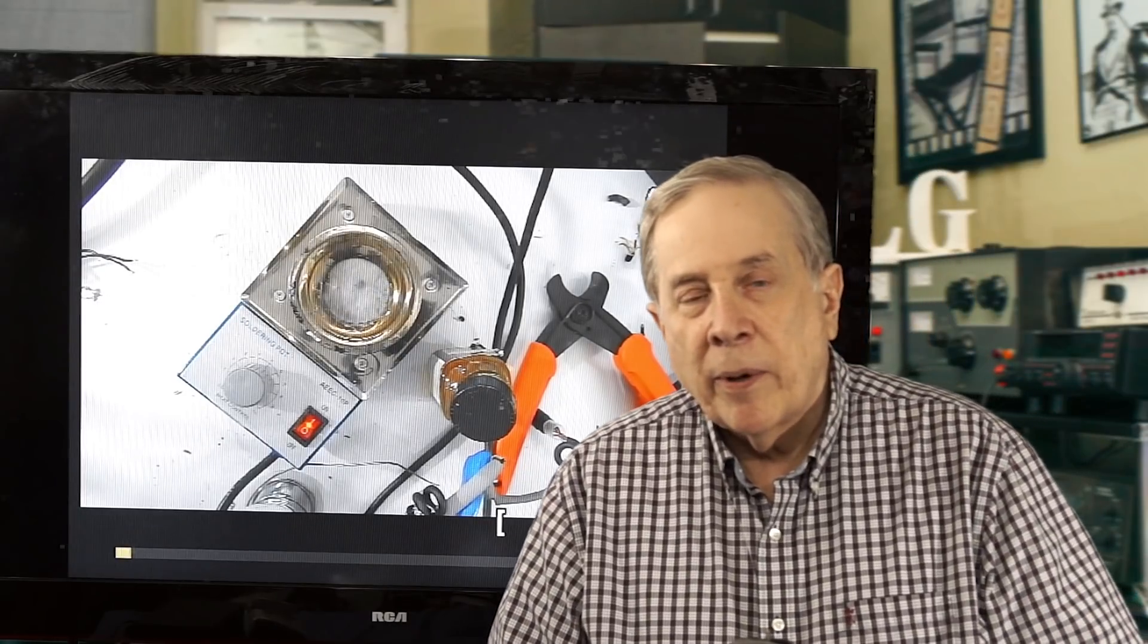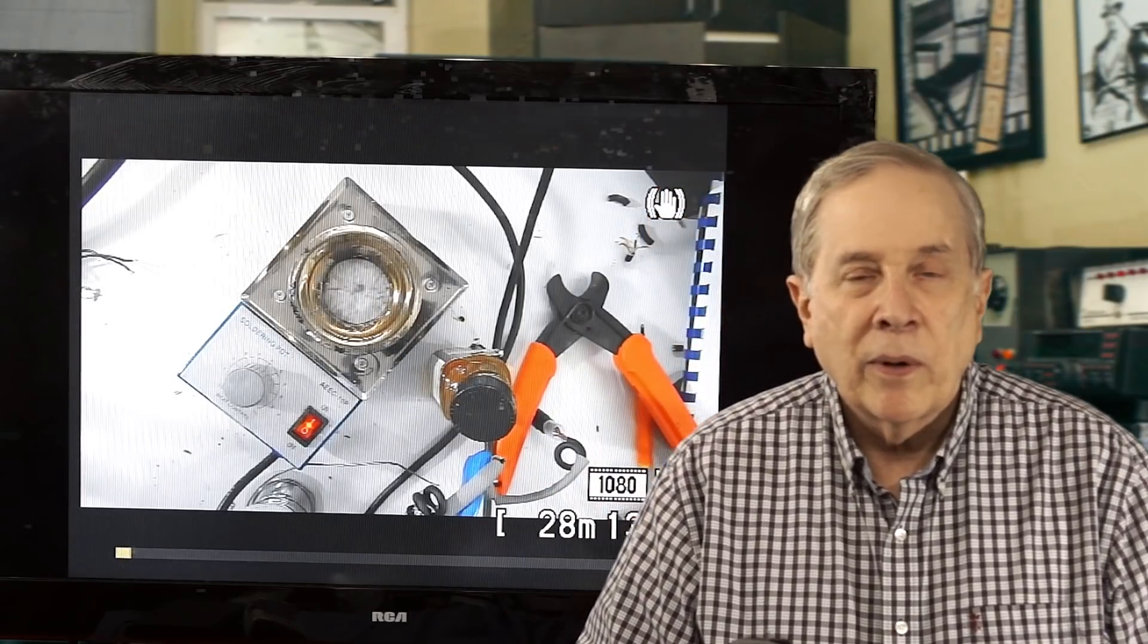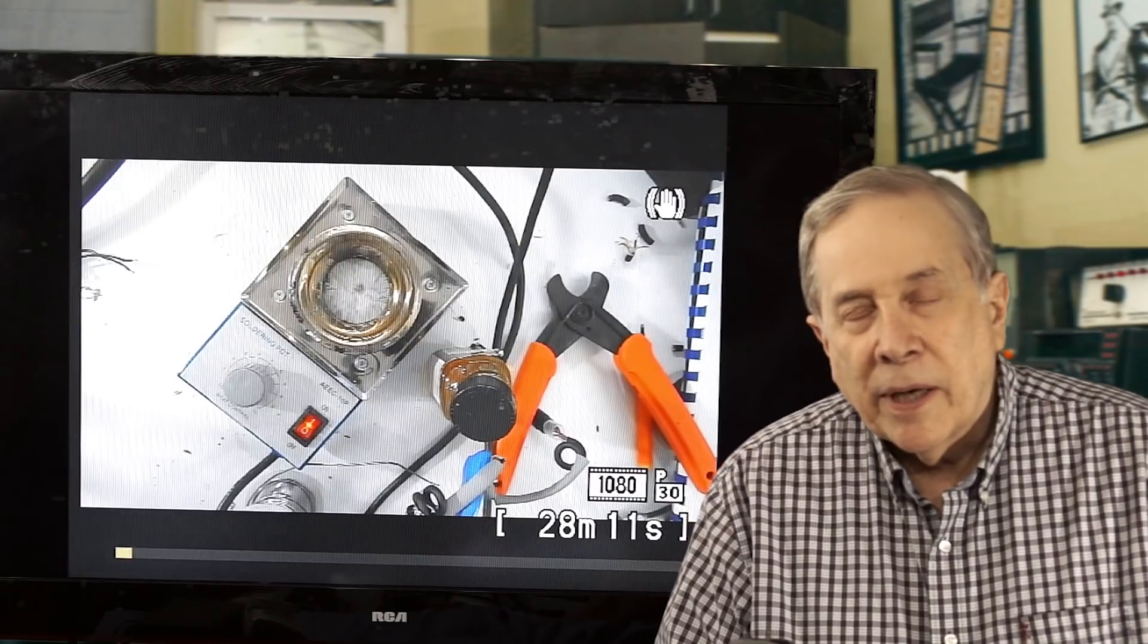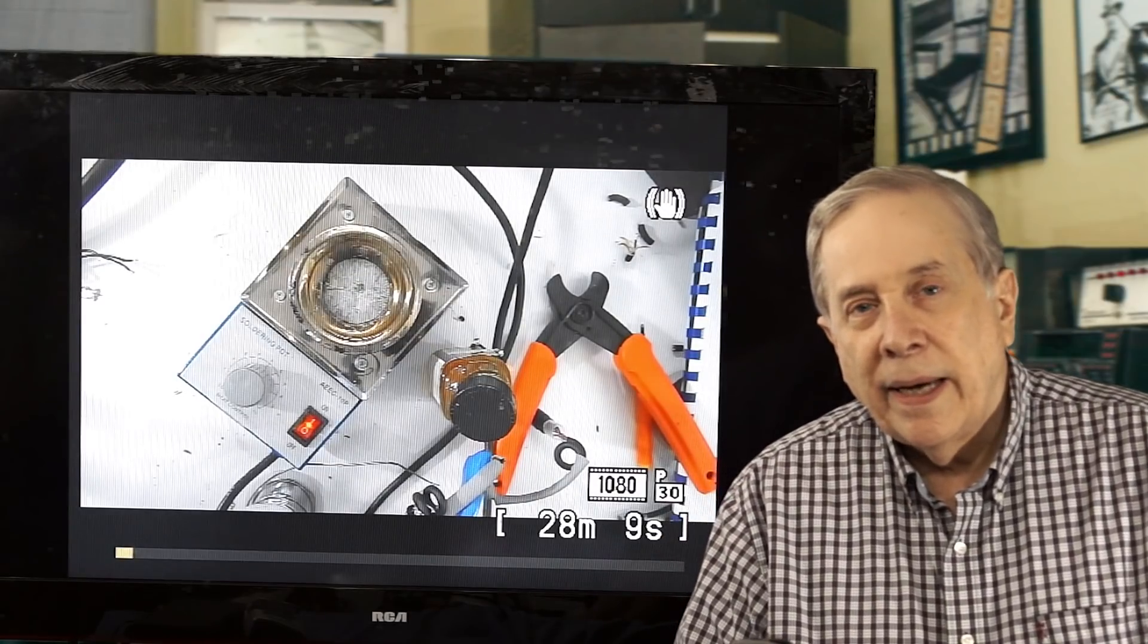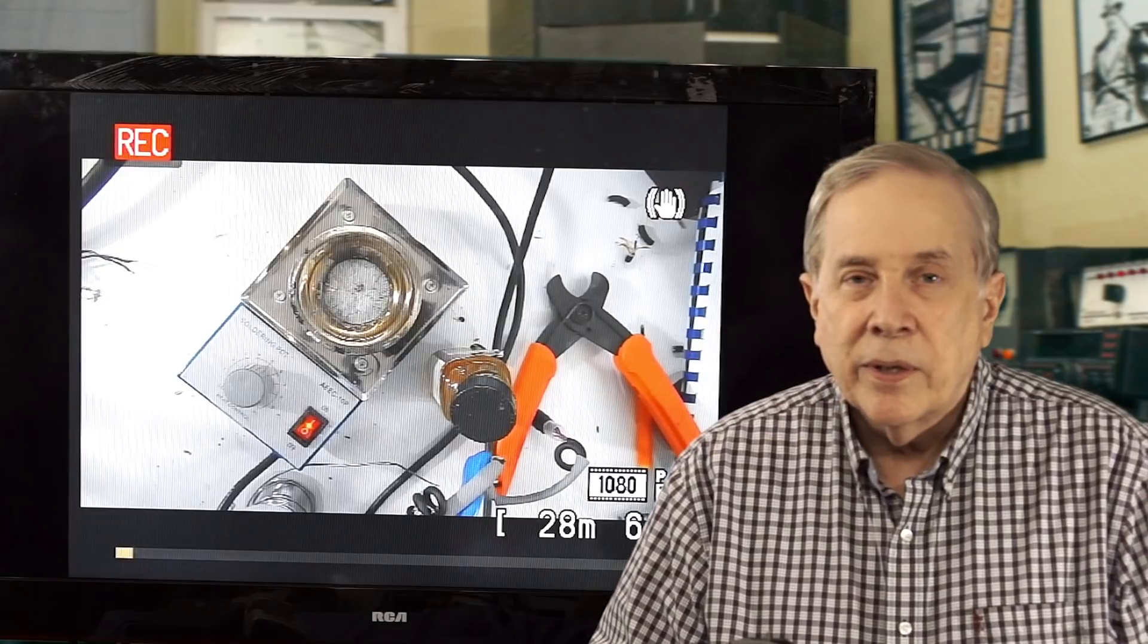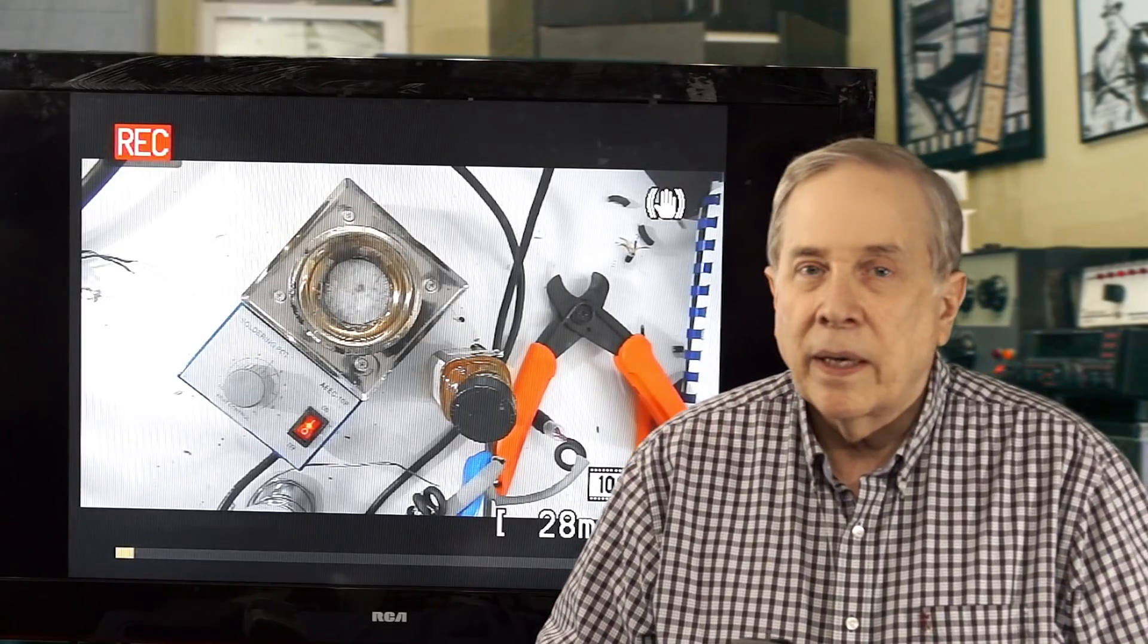Hi, I'm Jim W6LG for Ham Radio Basics. Welcome to my radio room here on Wolf Mountain. I'm going to solder on a coax connector and I'm probably going to crimp another one to show you the difference between soldering and crimping. And I'm going to do the soldering in a way that you may not have seen before.